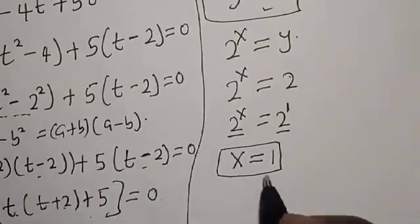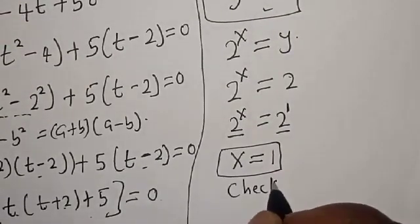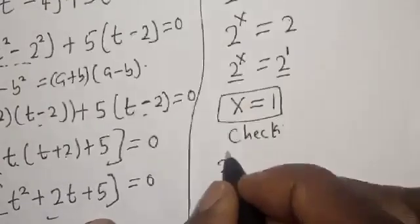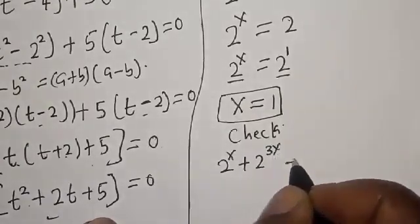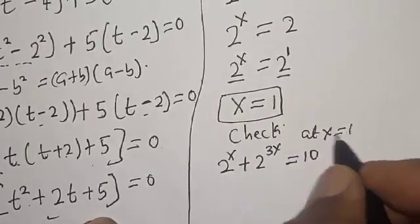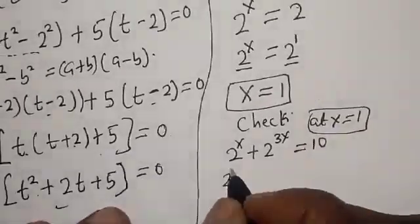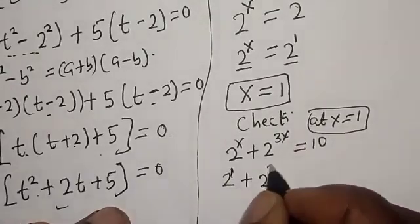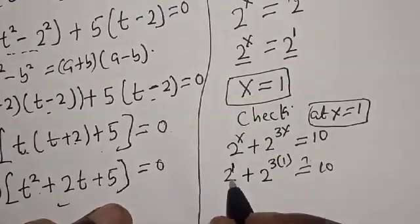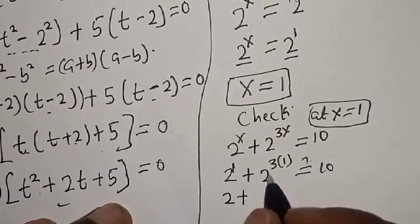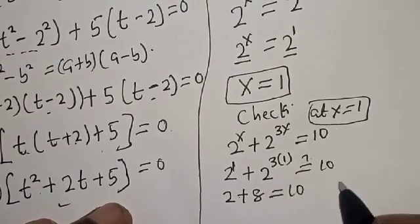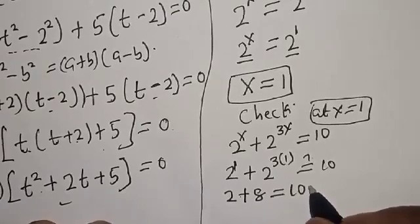We can check to confirm. The original equation is 2 raised to power x plus 2 raised to power 3x equals 10. At x equals 1: 2 raised to power 1 plus 2 raised to power 3 times 1 equals 10. Now, 2 raised to power 1 is 2, and 2 raised to power 3 is 8. And 8 plus 2 equals 10. Meaning our answer is confirmed.